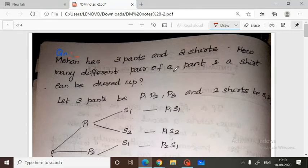can be dressed up? If you have three pants and two shirts, how many pairs of outfits are possible? What are the possibilities? Let's determine the number of possible outfits from these items.